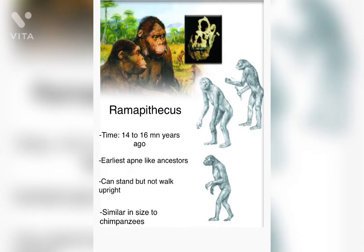It was about 14 to 16 million years ago that our ancestors were at this stage. In their earliest stage they were more like apes, that is they resembled more features like apes. Ramapithecus were first to stand upright but they were not able to walk upright and were similar in size to chimpanzees.